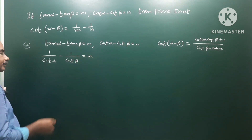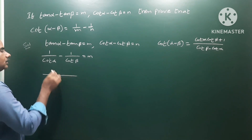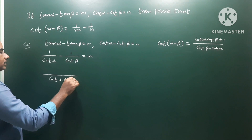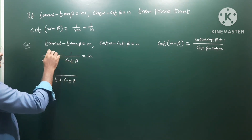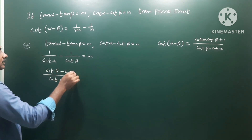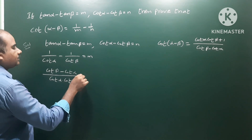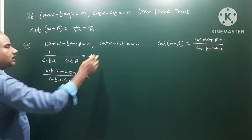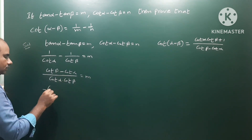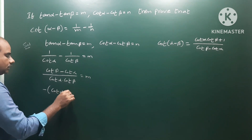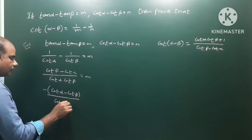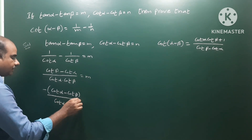Taking LCM, multiply out cot alpha into cot beta. So cot beta into 1 minus cot alpha into 1 gives cot alpha minus cot beta by cot alpha into cot beta, which is equal to n. So cot alpha minus cot beta divided by cot alpha cot beta equals n.